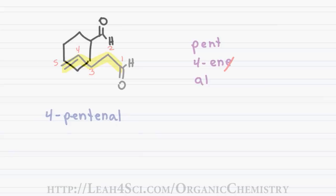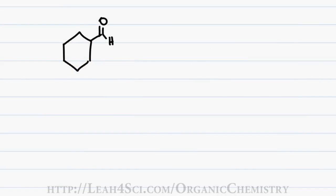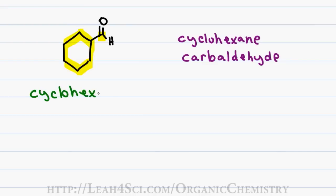When you have an aldehyde coming off of a cyclic compound, you name the cyclic compound and give it the ending carbaldehyde showing this is a carbon aldehyde. Since the cyclic compound has 6 carbons and no substituents, we simply call it cyclohexane. The aldehyde coming off the chain gives me an ending of carbaldehyde for a final name of cyclohexane carbaldehyde.